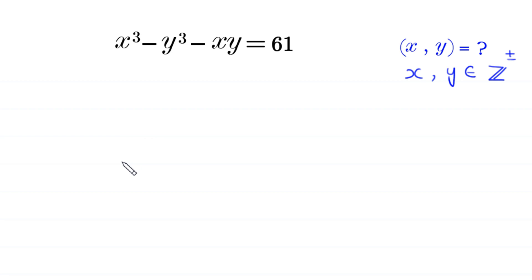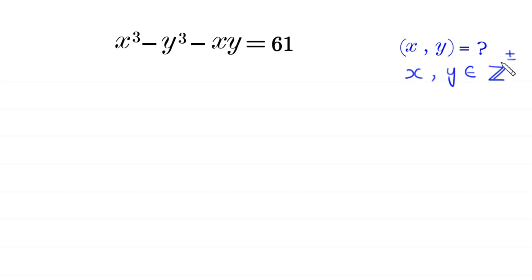Welcome to how to solve this very nice algebra equation: x cubed minus y cubed minus xy is equal to 61. We need to find all possible values of x and y where x and y are integers, both positive and negative. Let's start — first of all we move this negative xy to the right hand side.